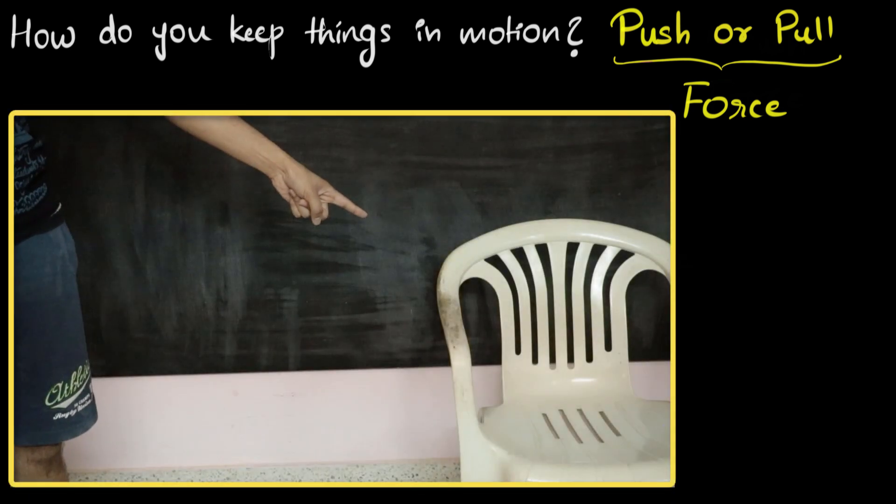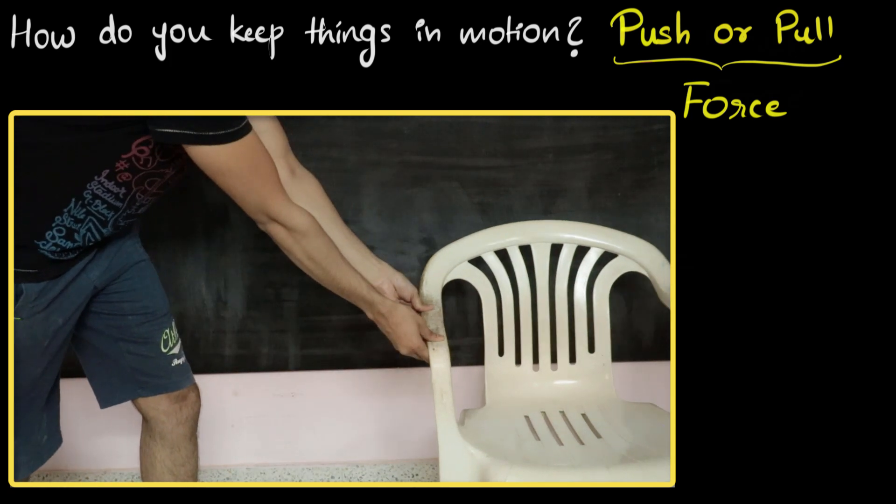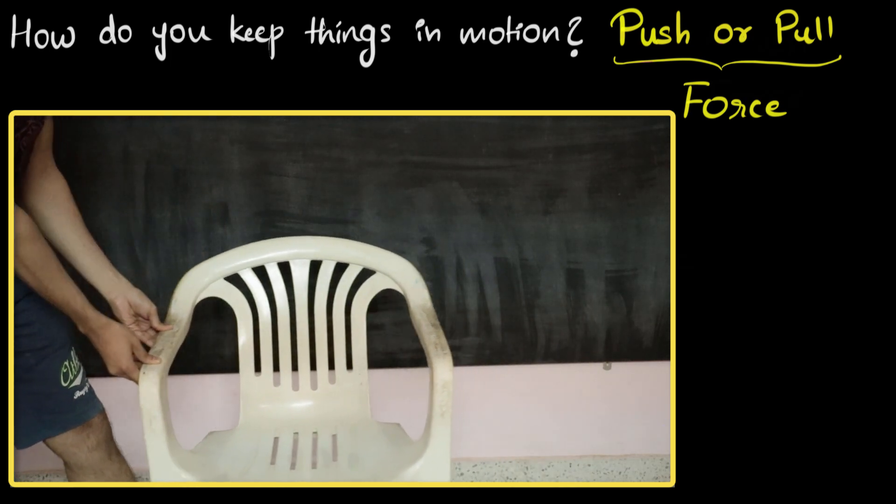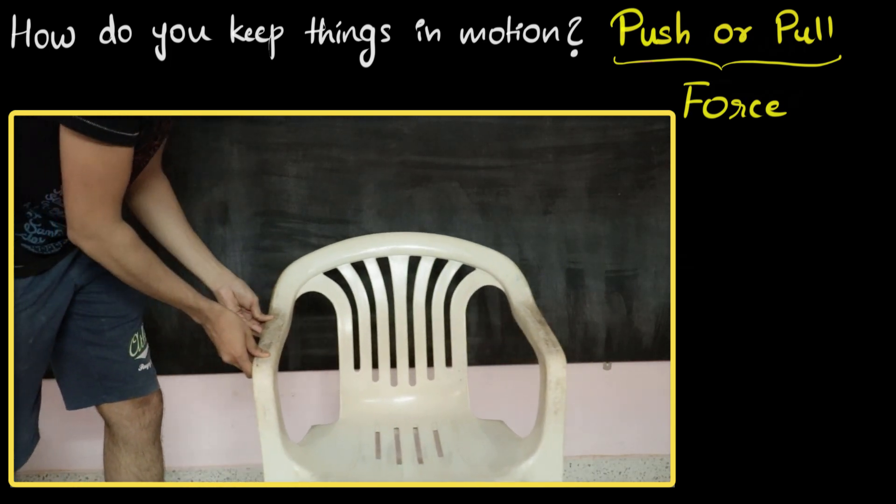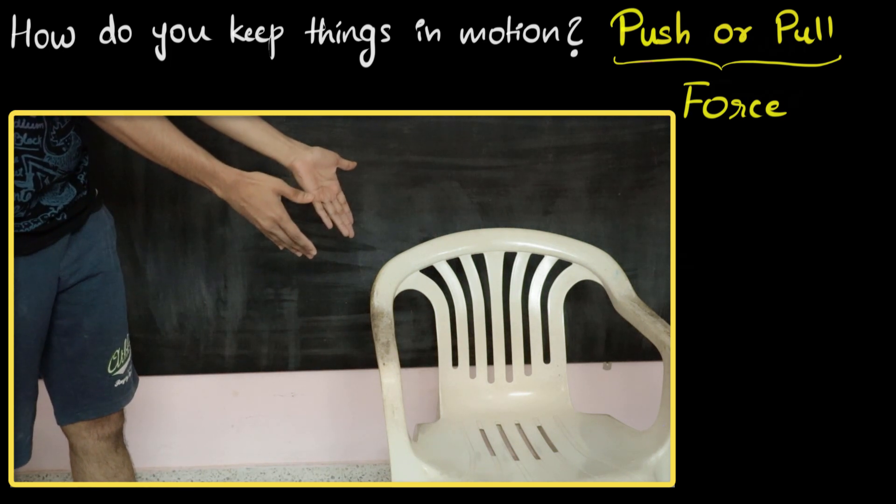For example, this chair is not moving right now. If I have to make it move, I have to keep on pulling on it or I have to keep pushing on it. If I stop pushing or pulling on it, look, it stops moving.